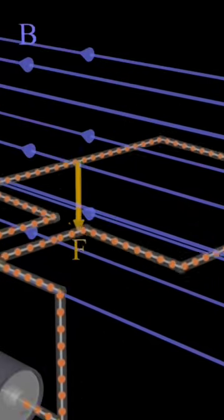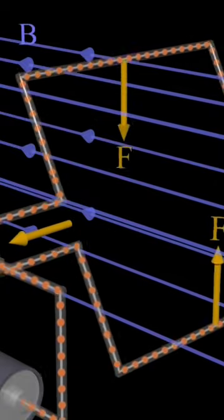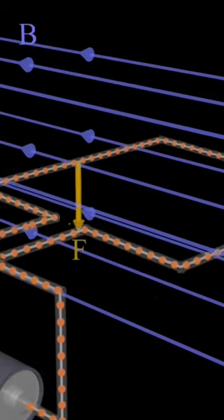The torque in a DC electric motor is created by magnetic forces exerted on the electric current carried by the rotating part of the motor.